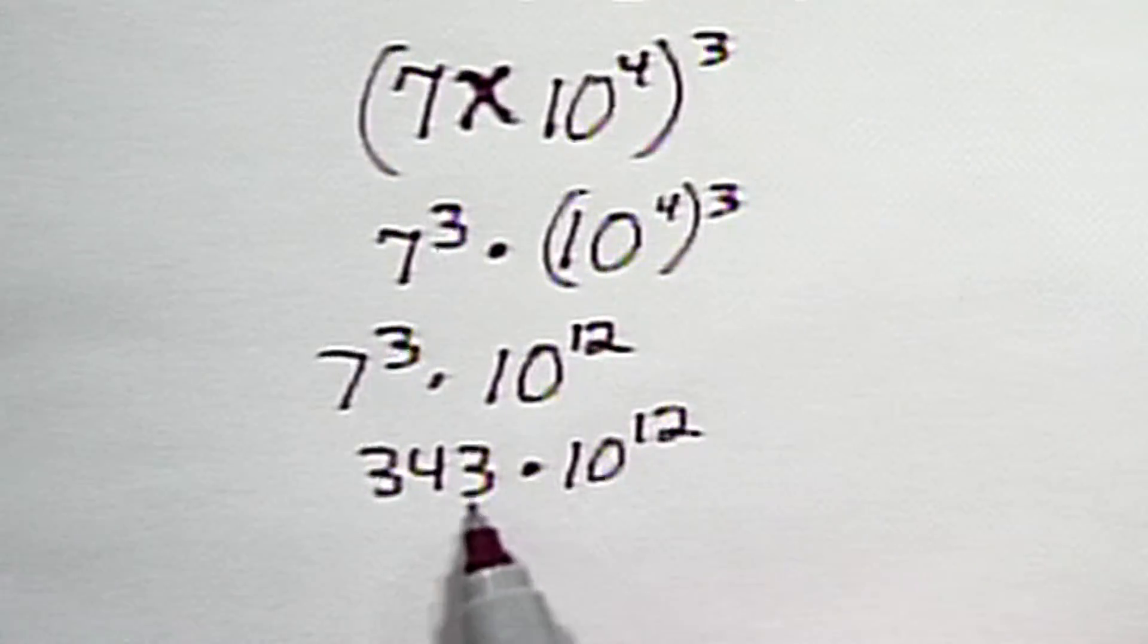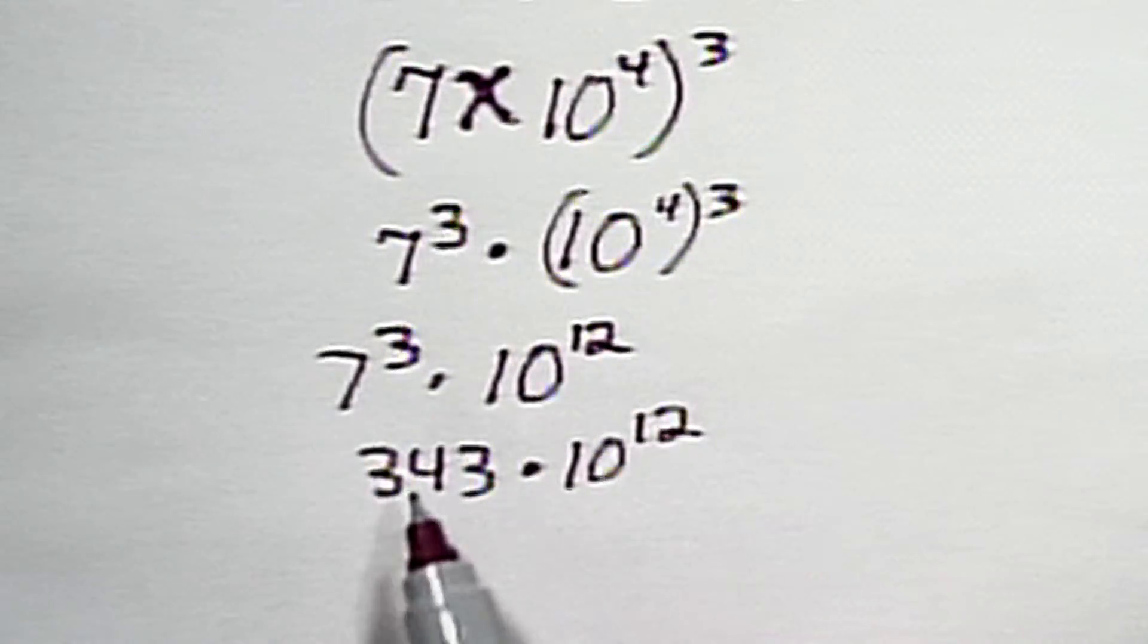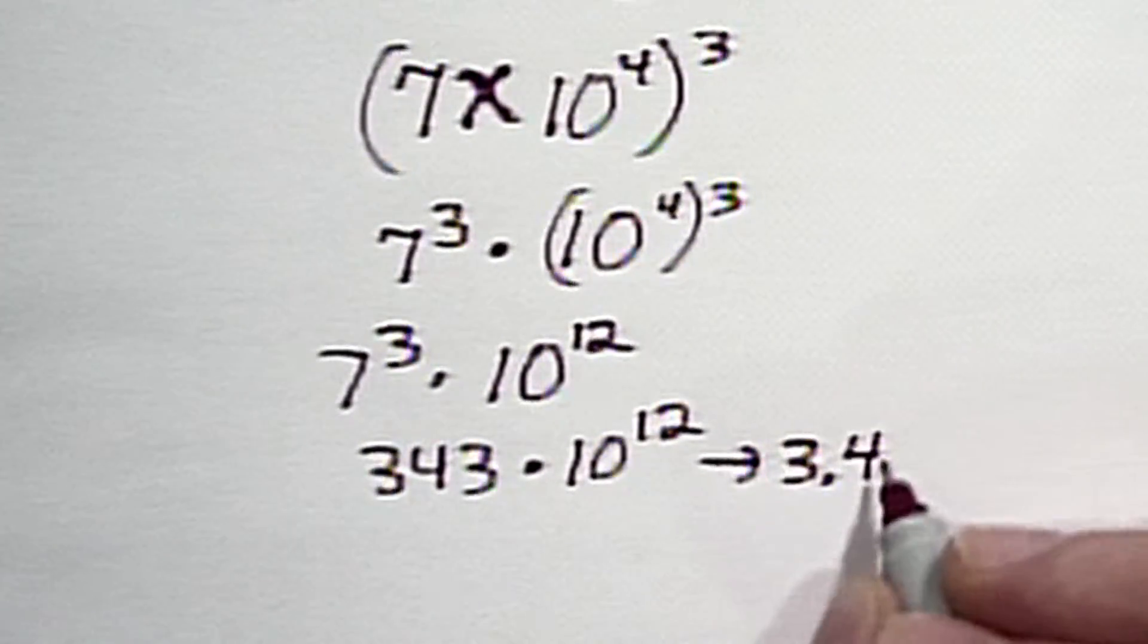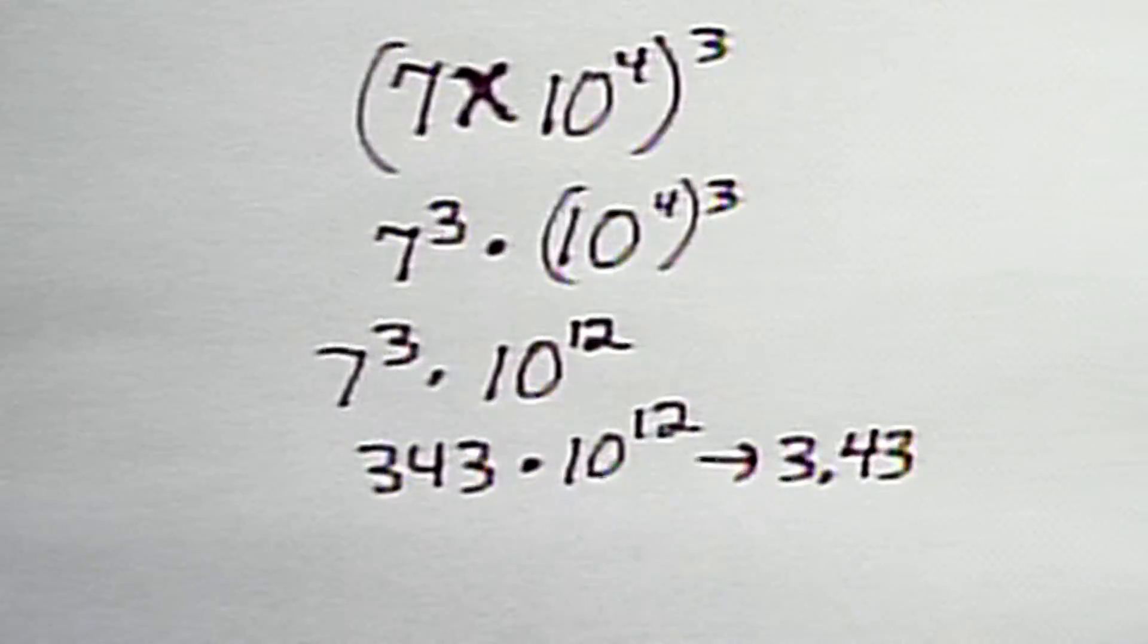What we need to do now is to get this into scientific notation, which means I need to get that decimal between the three and the four. That's the first three and the four over there. So here's what we're going to do. We're going to make this go to three and forty-three hundredths, or 3.43, as we like to say here on MathLine.